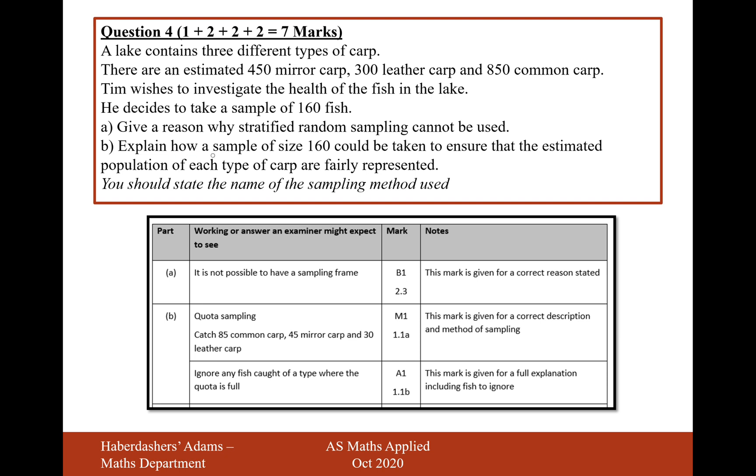Moving on to part B, explain how a sample size of 160 could be taken to ensure that an estimated population of each type of carp are fairly represented. Well, a good way of doing this without reading the mark scheme is to go fishing and then make a note of the proportions that we want here. I think these fish add up to 1,600. So on each type of fish, we'd want 45 on the mirror. We'd want 30 on the leather. And 85 on the common carp.